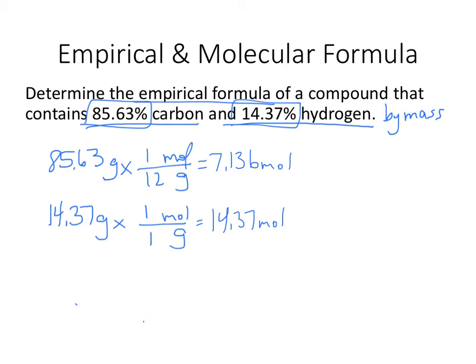So I'm going to try to get these to be the simplest whole number ratio that I can, and I'm going to do that by dividing them both by the same number. If I divide them both by the smaller of the two numbers, then the smallest number will automatically be 1, and the other one will hopefully be a whole number multiple of 1, and in this case 2, which tells me the empirical formula is CH2.